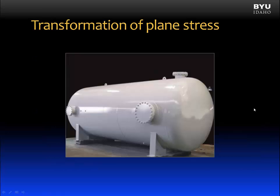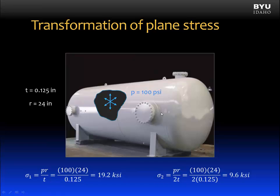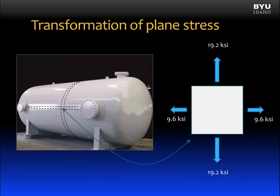Let's begin our discussion on the transformation of plane stresses by considering a pressure vessel. Inside there is a pressure of 100 pounds per square inch, the wall thickness is 0.125 inches, and the internal radius is 24 inches. We can calculate the hoop stress in the tank, getting a value of 19.2 ksi. We can also calculate the axial or longitudinal stress, which is half that value: 9.6 ksi.